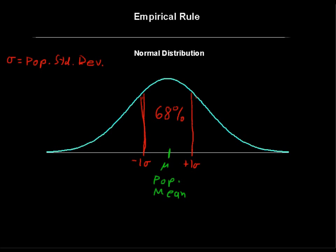Now if we bump this out and go just one more standard deviation, we go to minus two standard deviations and plus two standard deviations. Well, that is within two standard deviations from the mean.